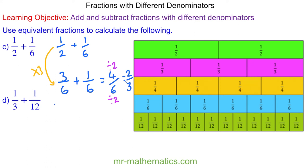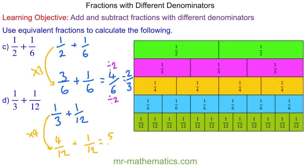For question D, one third add one twelfth. The common denominator will be twelve, because three goes into twelve four times. So this will be four twelfths and one twelfth, which is five twelfths. This cannot be simplified. Checking on the fraction wall: one third is four twelfths, and we're adding one more, so we do have five twelfths.